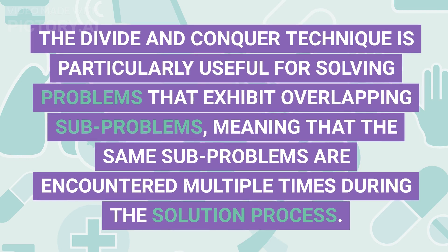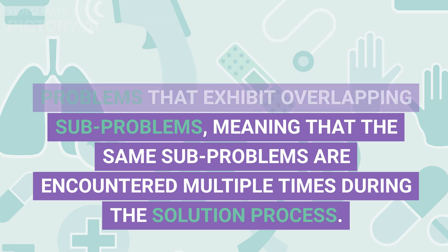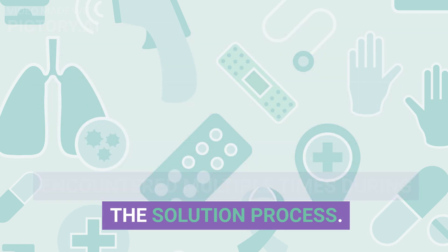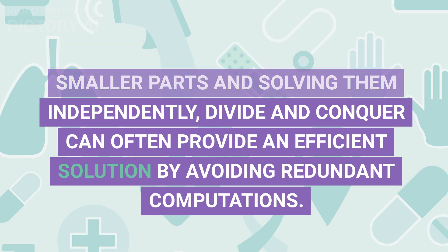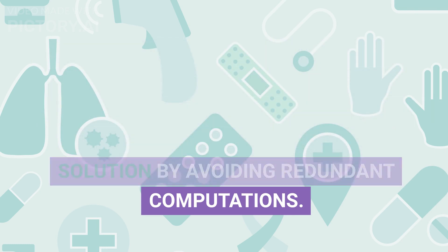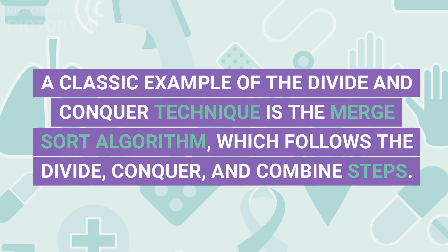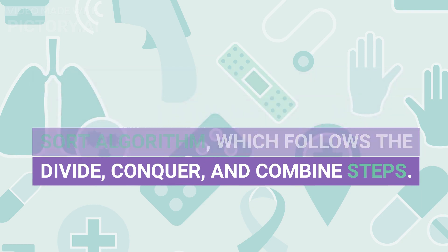The divide and conquer technique is particularly useful for solving problems that exhibit overlapping sub-problems, meaning that the same sub-problems are encountered multiple times during the solution process. By breaking the problem down into smaller parts and solving them independently, divide and conquer can often provide an efficient solution by avoiding redundant computations. A classic example is the merge sort algorithm, which follows the divide, conquer, and combine steps.